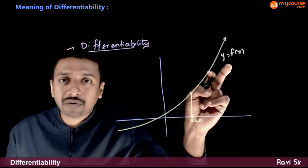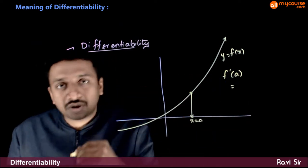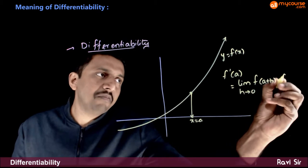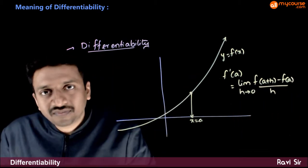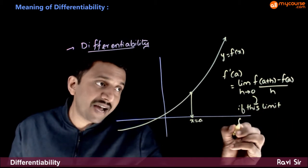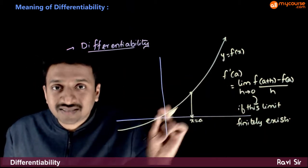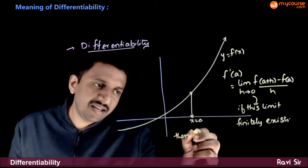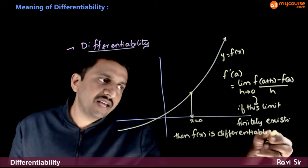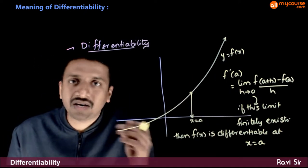What is the differentiation of y equal to f of x at x equal to a? By the first principle of differentiation, f dash of a is equal to limit h tends to 0 of f of a plus h minus f of a, divided by h. If this limit finitely exists, then we say that f of x is differentiable at x equal to a. And if this limit does not exist, then f of x is not differentiable at x equal to a.